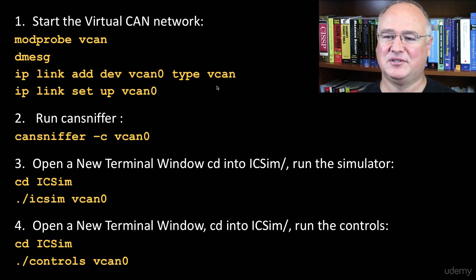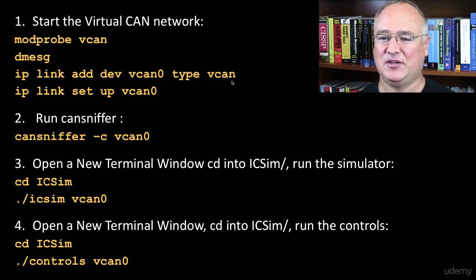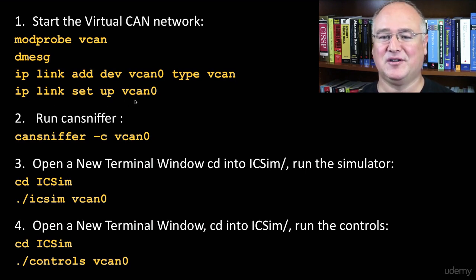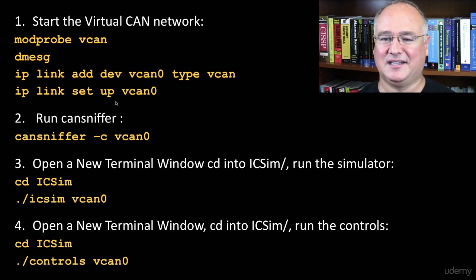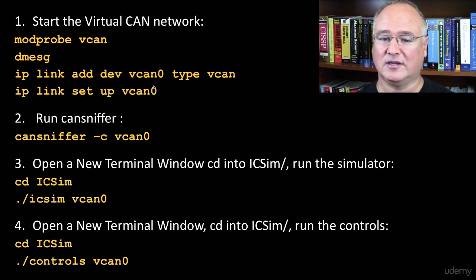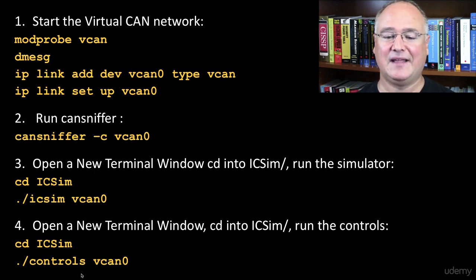Then ip link add dev vcan0 type vcan added a new device called vcan0 of type vcan - so we set up a network. Then we turned it on by saying ip link set up vcan0. We were able to run can-sniffer and in the beginning there was nothing running across that network, but as soon as we loaded the icsim and the controls from our icsim folder, we were able to run a real Controller Area Network simulator.